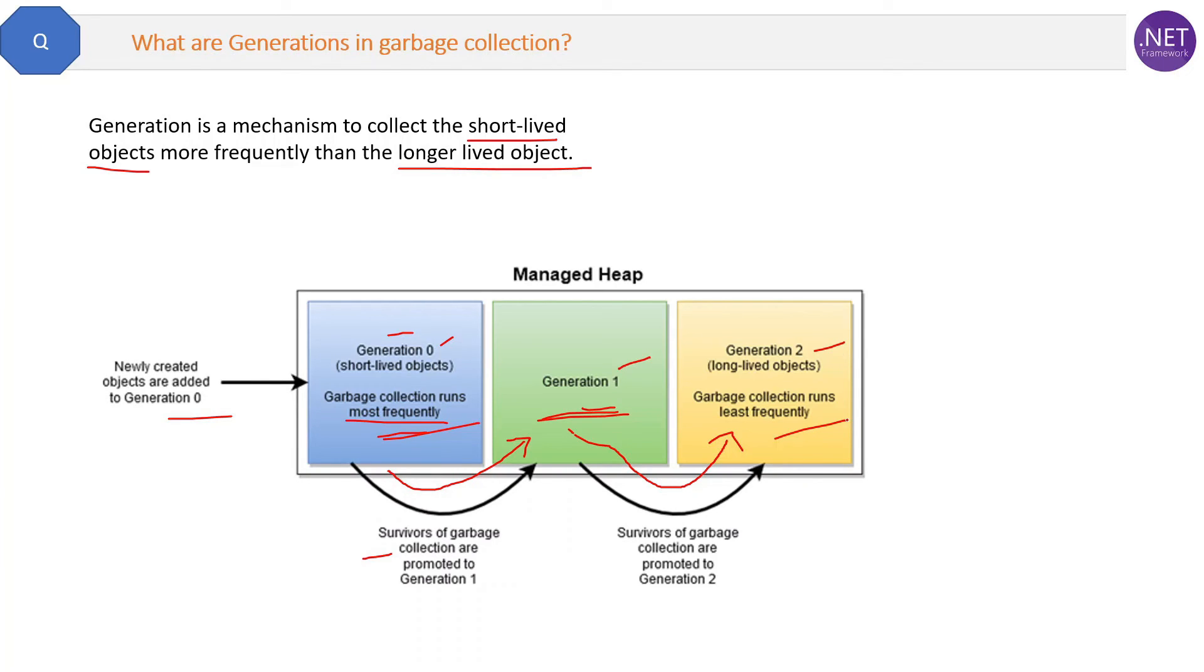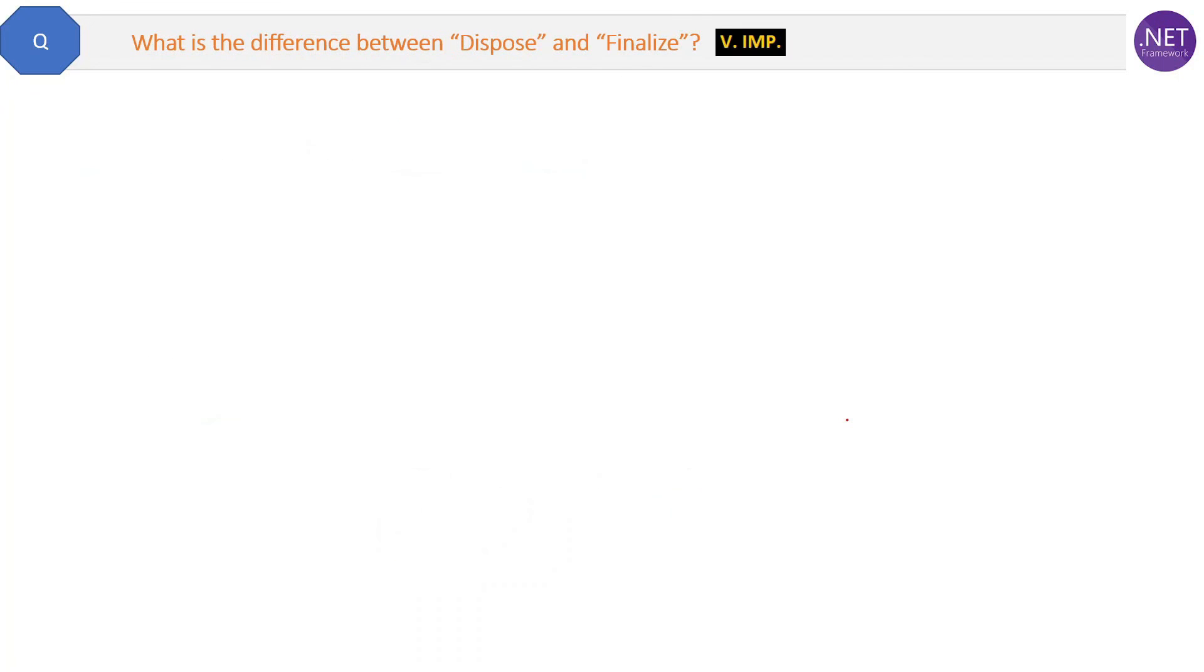They are of three types: Generation 0, 1, and 2. That is the answer to this question.